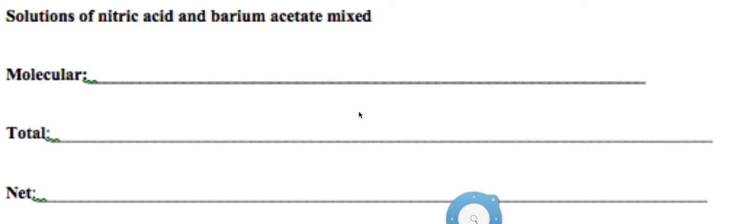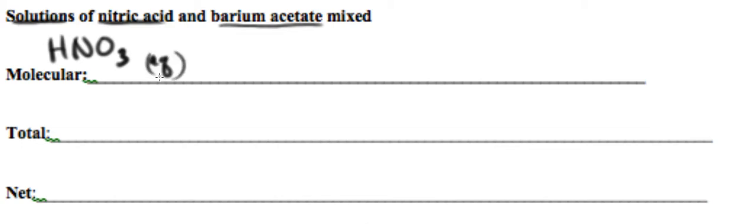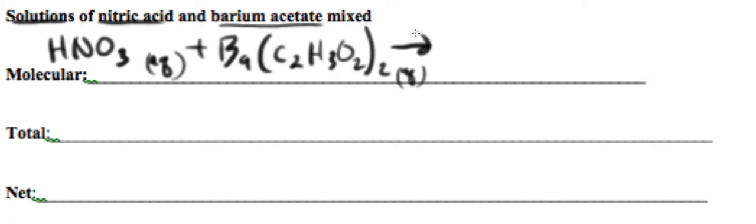Let's write the molecular, total, and net ionic equation when we mix solutions of nitric acid and barium acetate. We know they're in solution and nitric acid is a strong acid, but in the molecular equation we write those together. Barium has a plus two charge and it's soluble in water because all acetate compounds are soluble in water.